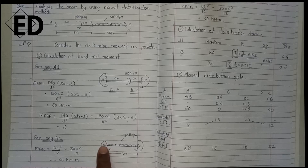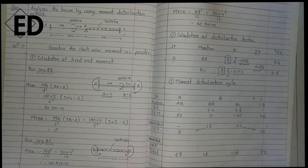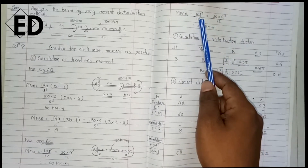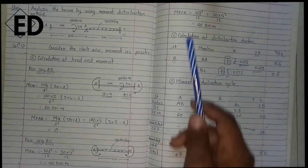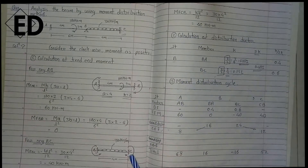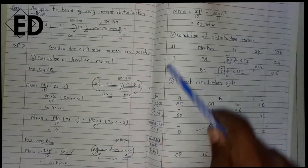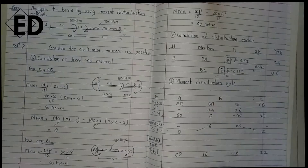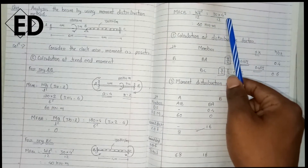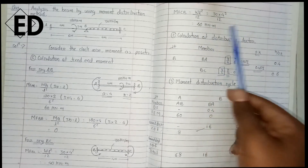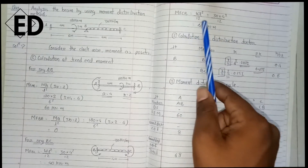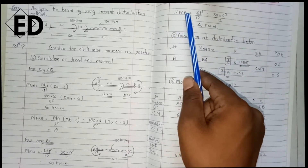Now for the fixed end moment from C to B, the formula used is WL²/12. Here we do not take a negative sign because the moment created at this support is in the clockwise direction, which is positive. Putting in 30 × 4² / 12, we get +40 kNm as the fixed end moment from C to B.